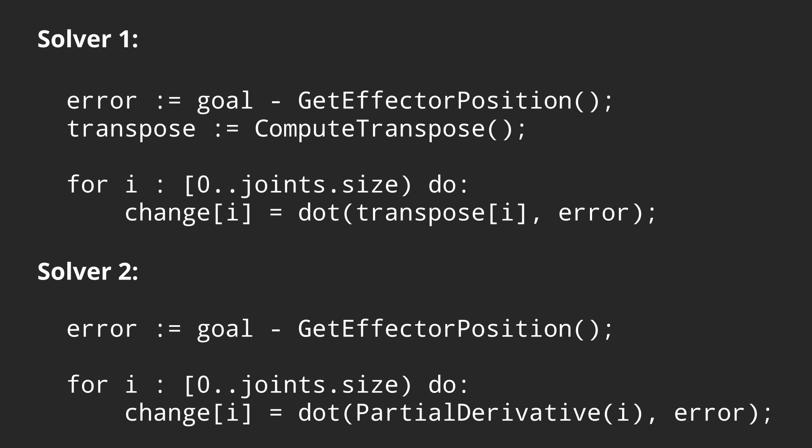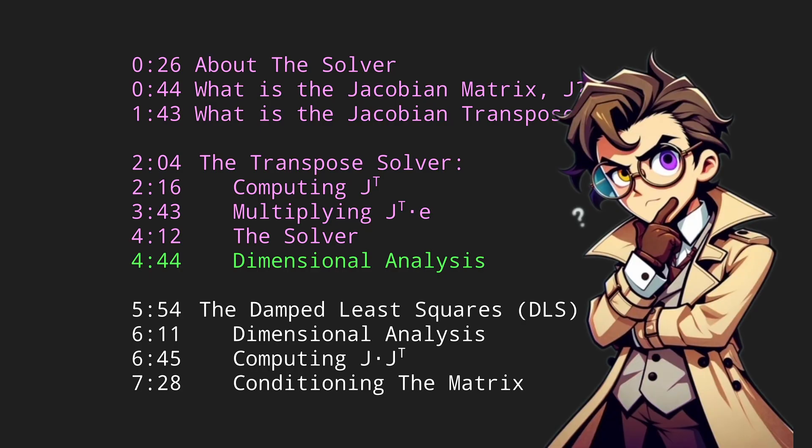Because all the joints are independent, we can get the partial derivatives for just that joint and get the dot product of the end effector with it. So the lower example here is equivalent to the upper example. When you think about it, this method is very strange. There's no way it should work.